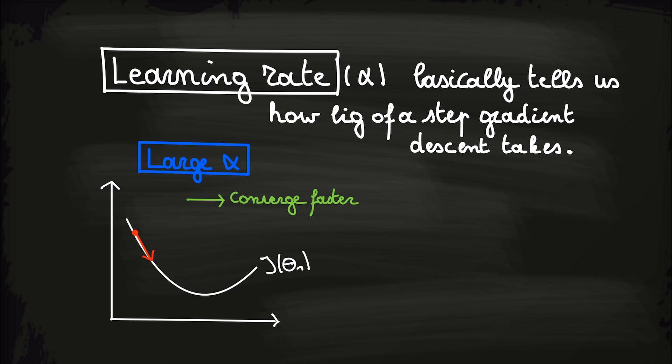On the other side, if alpha is too large, we might never converge. And thus the gradient descent algorithm will fail to converge.